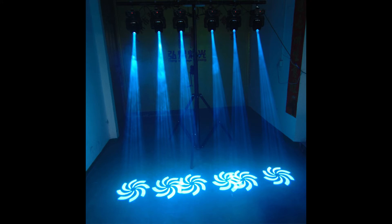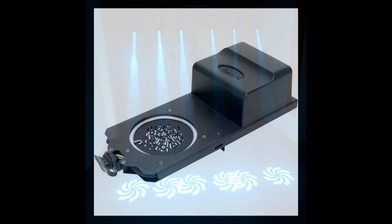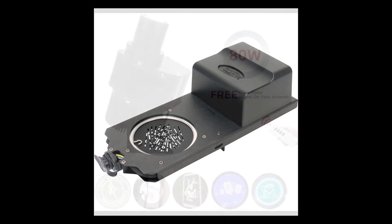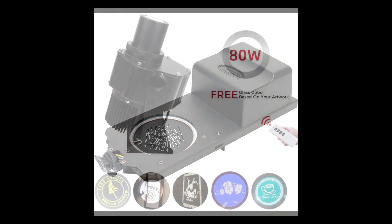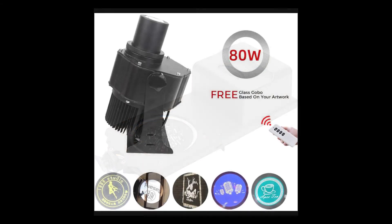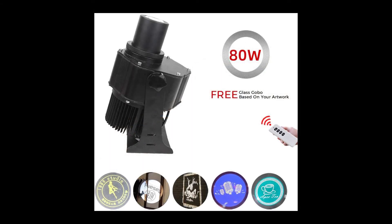Por otra parte, existe una gran variedad de aparatos para dar movimiento a los gobos, como son los rotadores y los cambiadores. Los spots de luz robotizadas suelen tener varios gobos instalados, con mecanismos de rotación, cambio de posición y cambio de color.